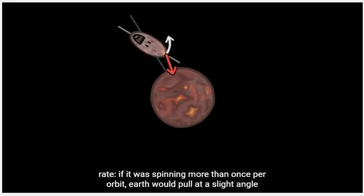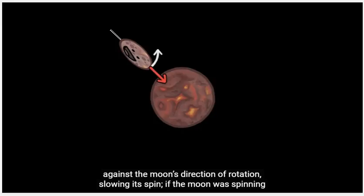If it was spinning more than once per orbit, Earth would pull at a slight angle against the Moon's direction of rotation, slowing its spin.